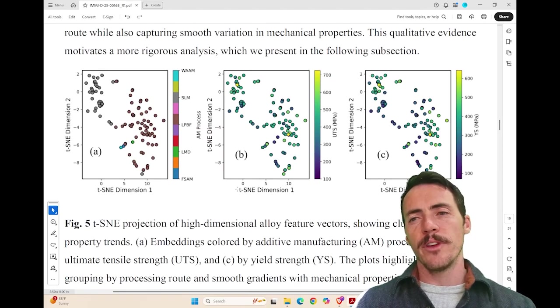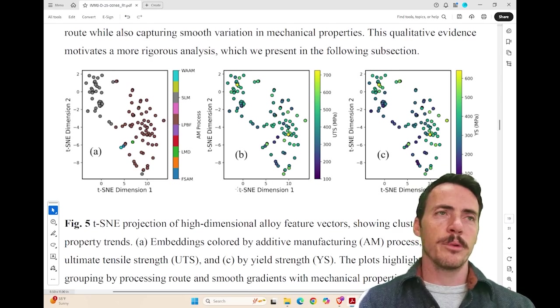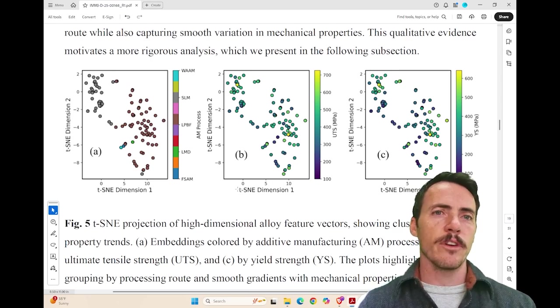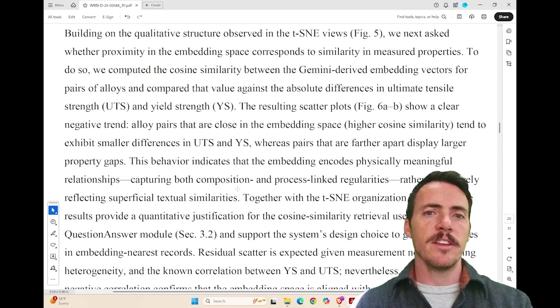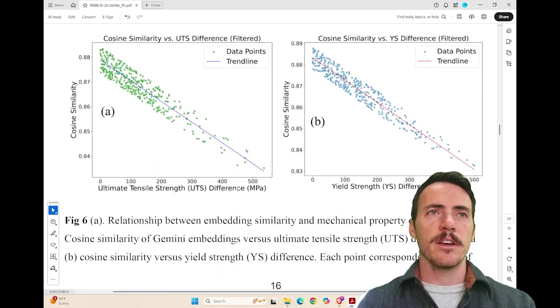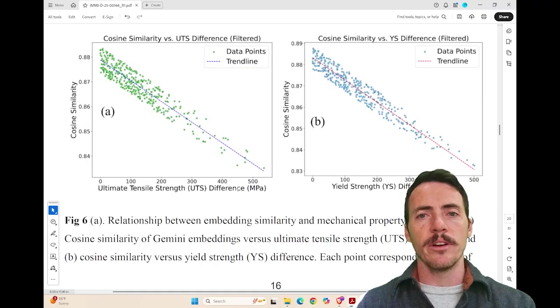They do a couple of other things. They explore how the embedding space works and they're particularly interested in seeing if it's preserving physically meaningful properties. So they actually do the embeddings and then they take the distance in the embeddings and they compare that cosine similarity with the properties to show that there's the expected trend here.